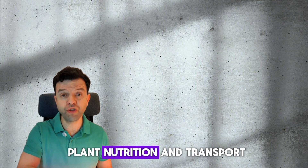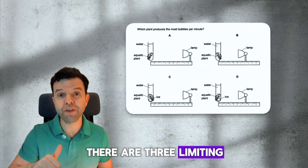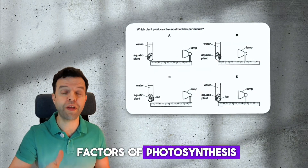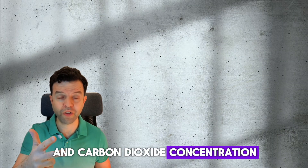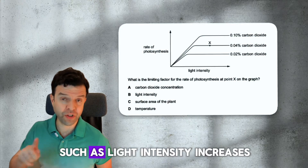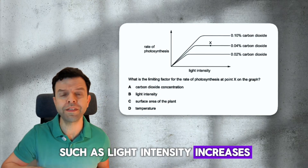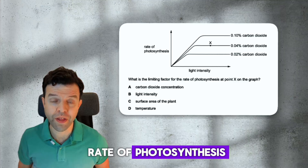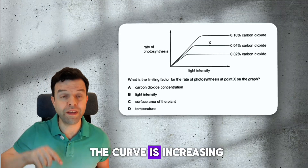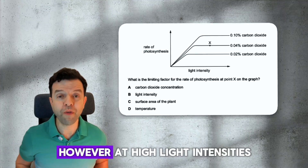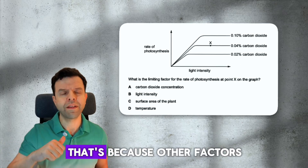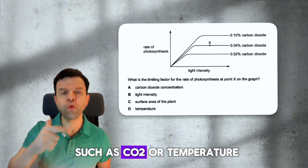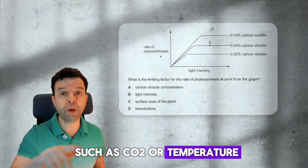Moving to plant nutrition and transport. There are three limiting factors of photosynthesis: temperature, light intensity, and carbon dioxide concentration. When a limiting factor such as light intensity increases, it will increase the rate of photosynthesis and you find that the curve is increasing. However, at high light intensities, the rate of photosynthesis becomes constant, because other factors such as CO2 or temperature become limiting.